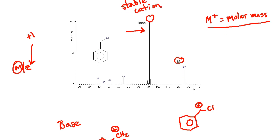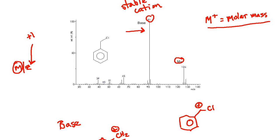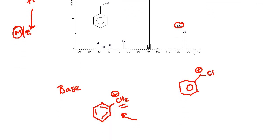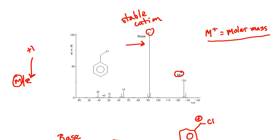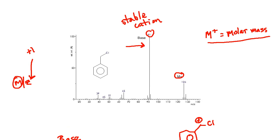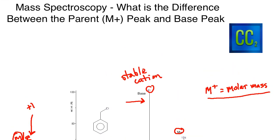That's a quick primer on the difference between the M+ or the parent peak, which is your molar mass, and the base peak. The base peak has nothing to do with the molar mass. The tallest peak simply has to do with the most stable cation that is likely going to form in the process of this fragmenting when you remove portions of the molecule.